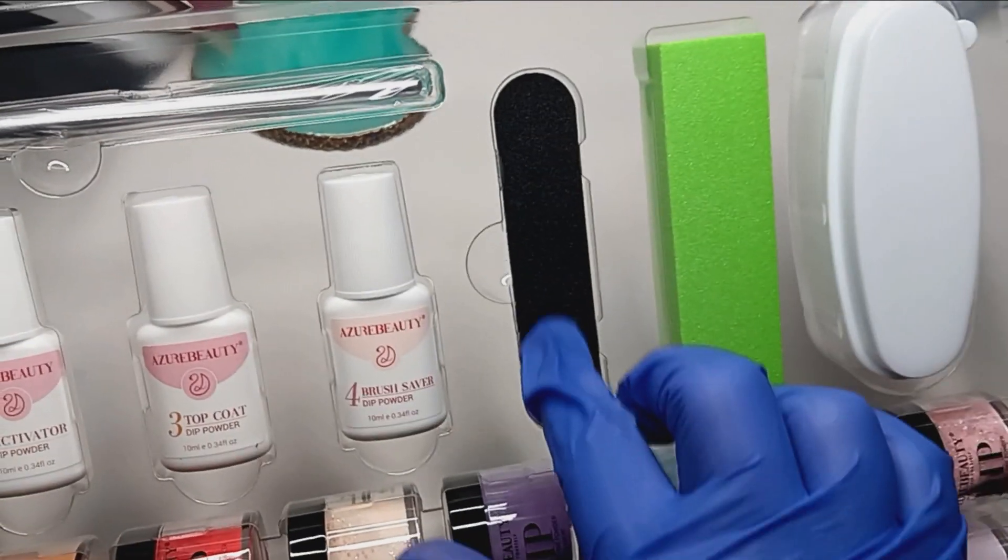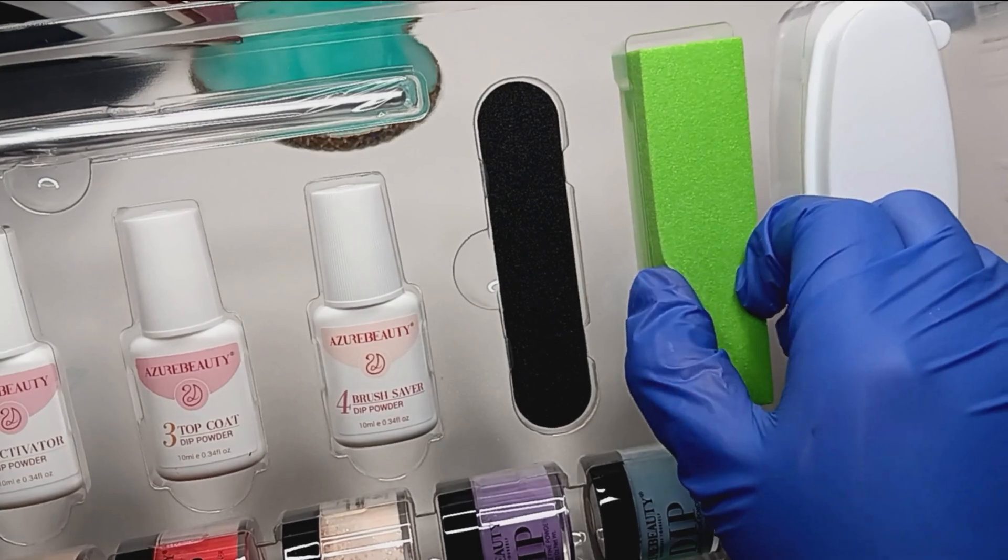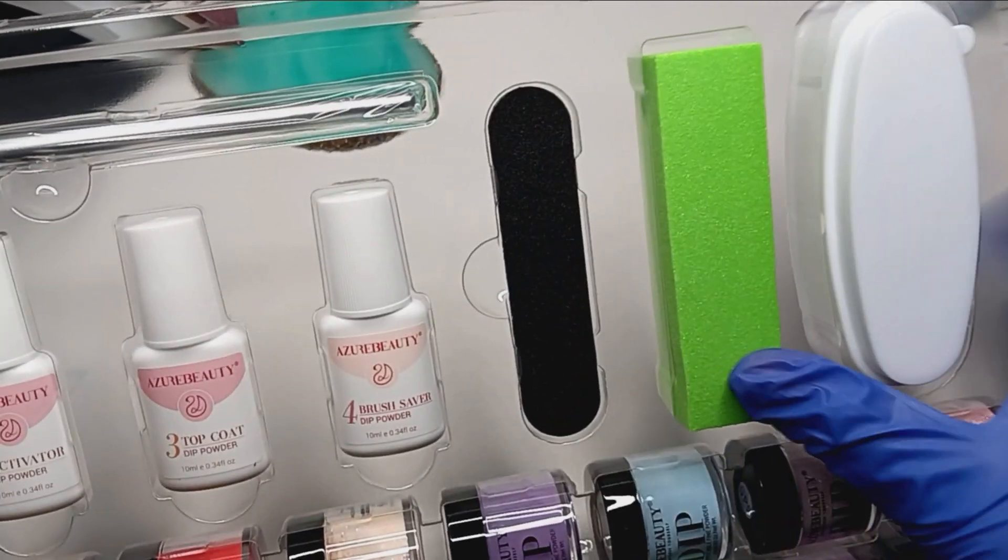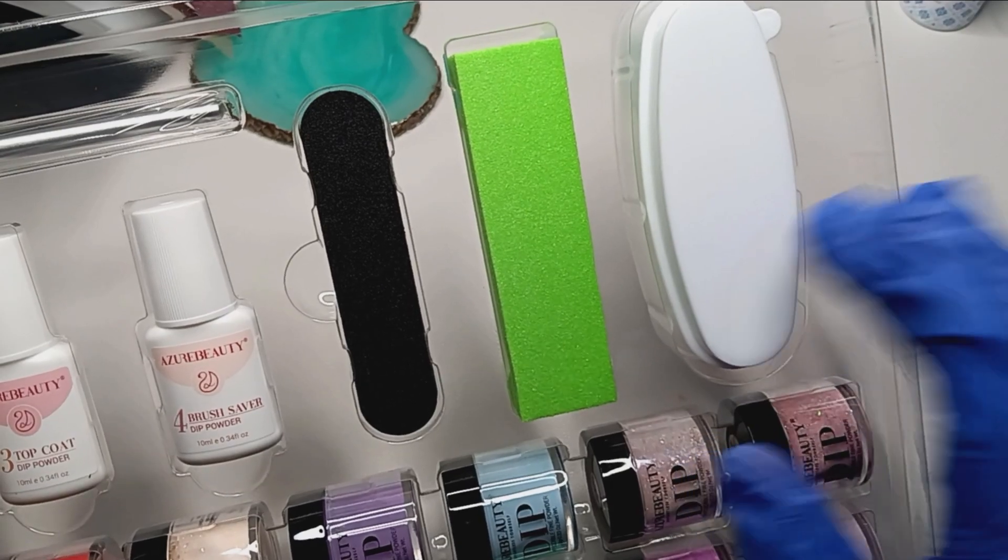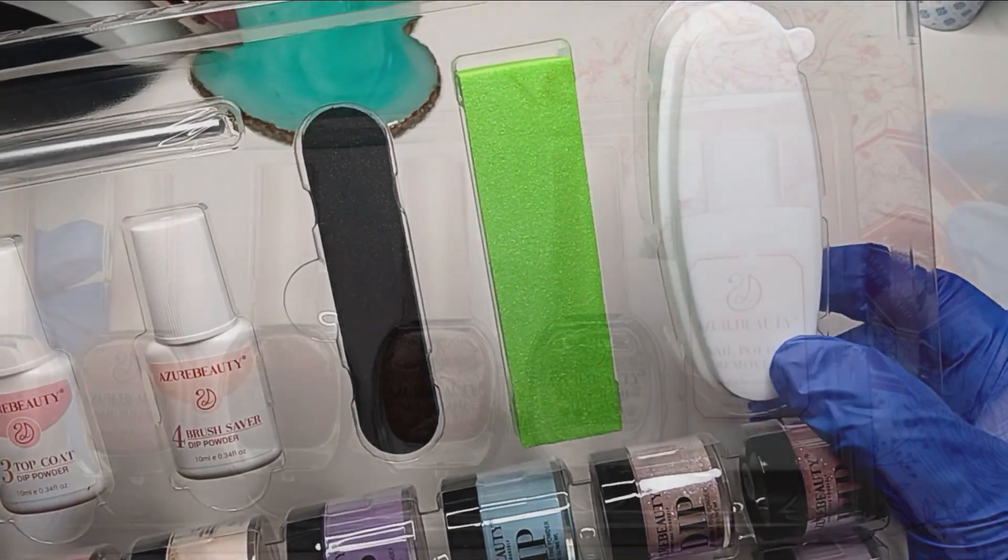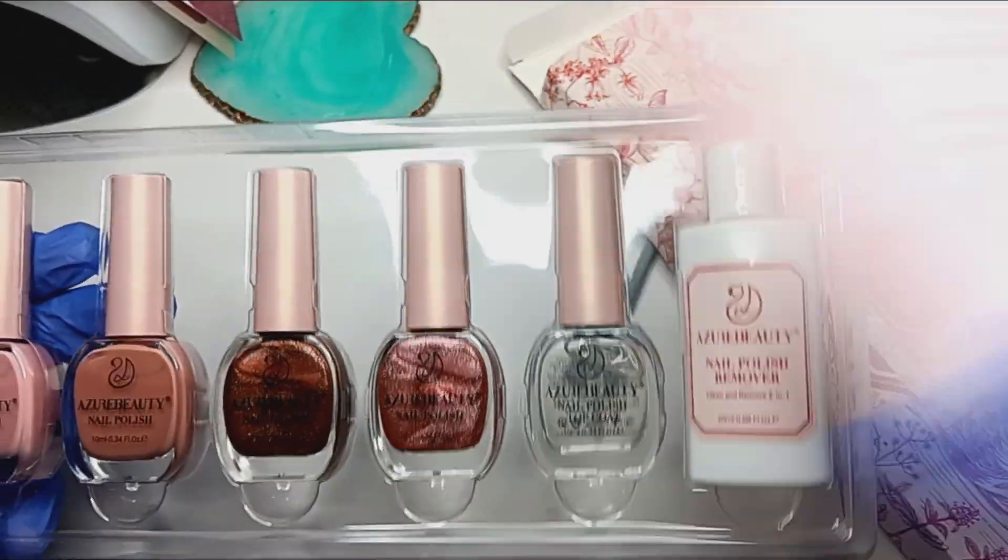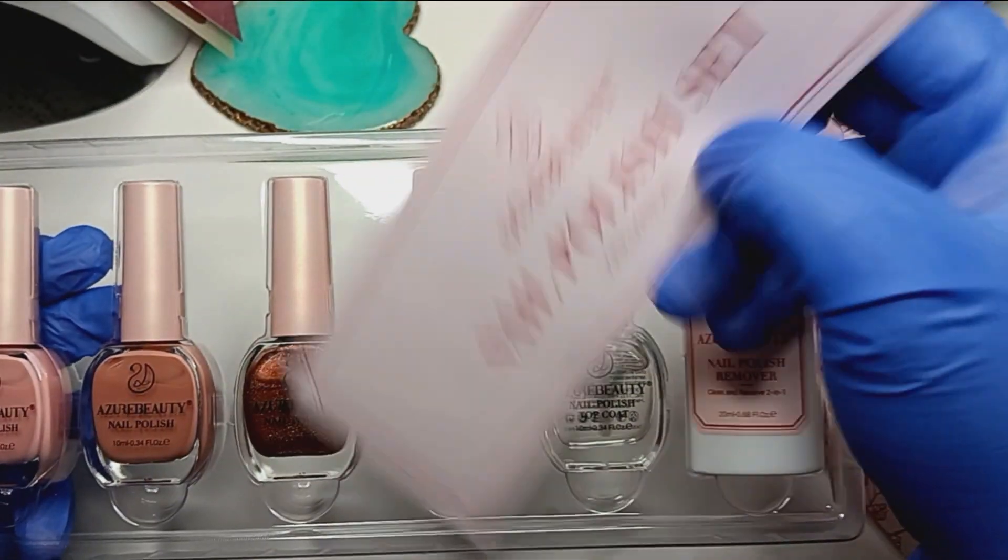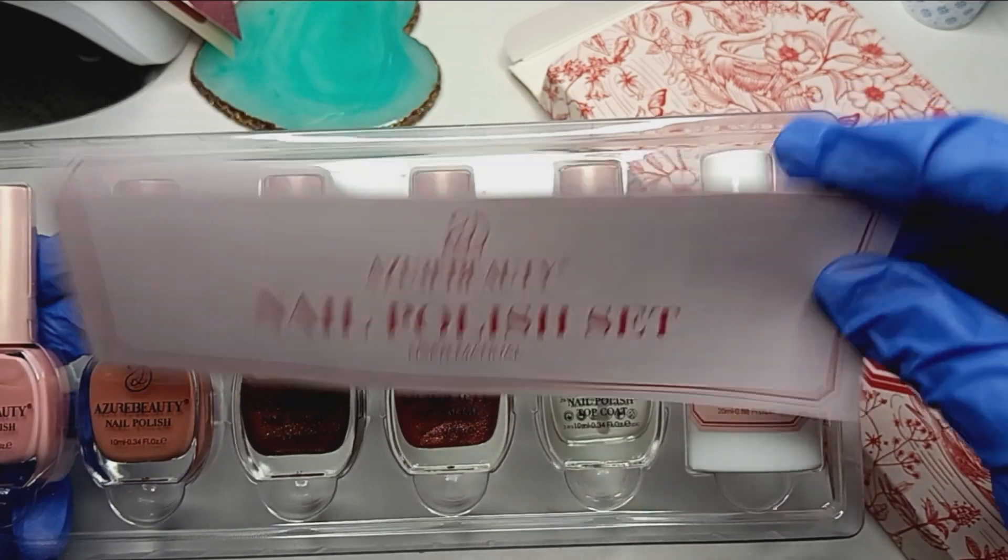Here is the unboxing. Of course, you get the dust brush and then your nail file, your nail buffer. And they also include a really nice dip tray.